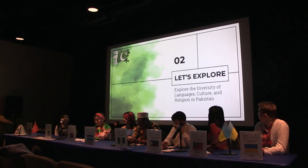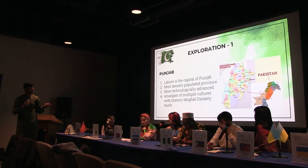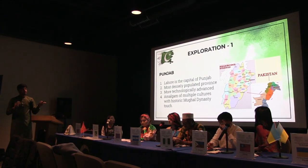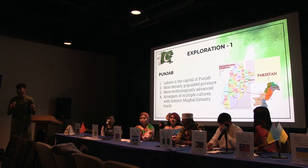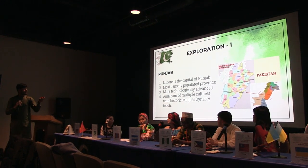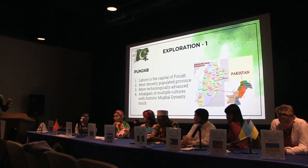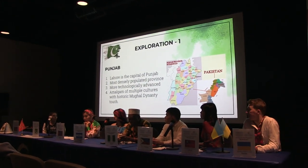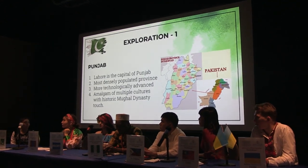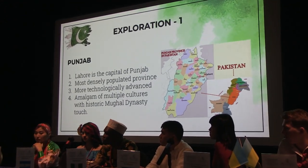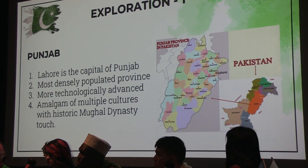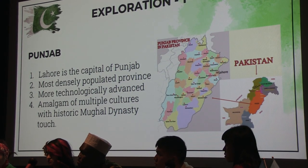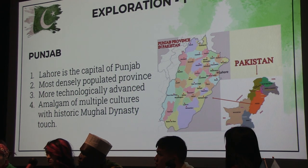We are going to explore the four different provinces of Pakistan. First, Punjab. Punjab is the most densely populated province in Pakistan with Lahore as its capital. It's more technologically advanced and has a multitude of different cultures with a historic Mughal dynasty. Pakistan and India were once a subcontinent ruled by the Mughal emperors, who left their mark on Lahore.